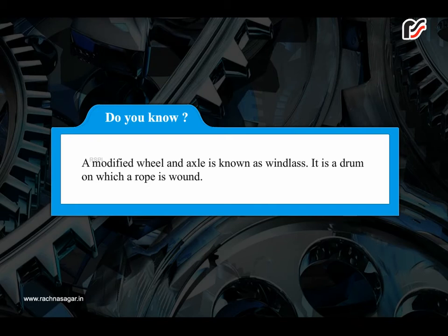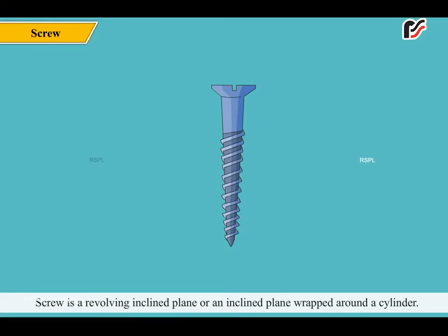Do you know? A modified wheel and axle is known as a windlass — it is a drum on which a rope is wound. A screw is a revolving inclined plane, or an inclined plane wrapped around a cylinder.